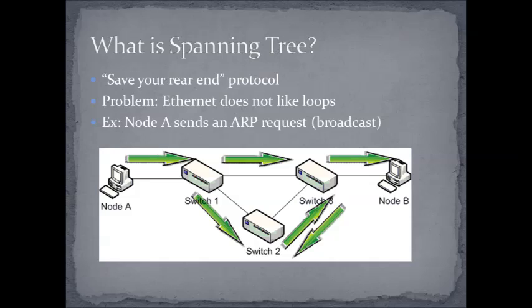So why are loops so bad? Here's the topology: three switches in a loop. If node A issues an ARP request, which is a broadcast frame, it goes to Switch 1. Switch 1, knowing it's a broadcast, must send it out all ports except the one it came in on, so it sends the broadcast to both Switch 2 and Switch 3. Switch 2 and Switch 3, obeying the rules, forward them on. Now this broadcast message comes right back around to Switch 1. That's what we call a broadcast storm. Spanning tree says that's a bad thing — let's kill off these loops.